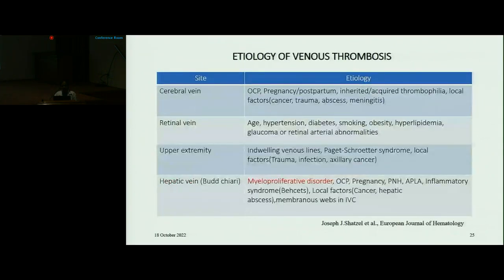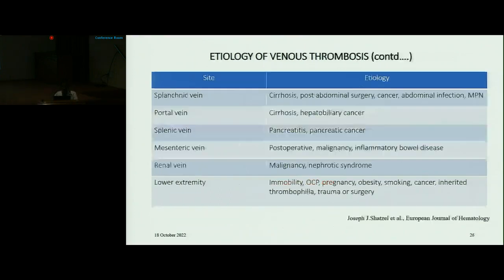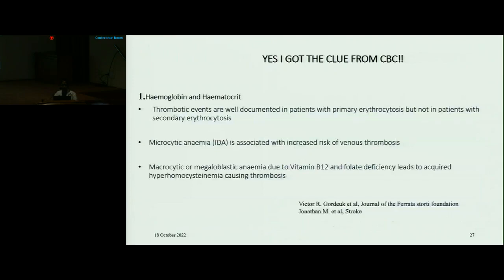When discussing the etiology of venous thrombosis, it is helpful to consider the site of thrombosis, because we need to look for local factors as well as causes which produce thrombosis at specific sites. For example, if a patient presents with acute Budd-Chiari syndrome, we should always rule out myeloproliferative disorder. Regarding routine investigations, hemoglobin and hematocrit can give valuable clues. Thrombotic events are well documented in primary erythrocytosis but not in secondary erythrocytosis. Microcytic anemia is associated with increased risk of venous thrombosis, and macrocytic or megaloblastic anemia due to vitamin B12 and folate deficiency leads to hyperhomocysteinemia, causing thrombosis.